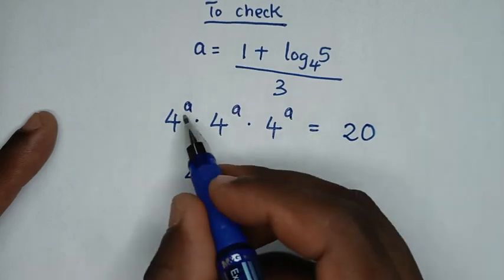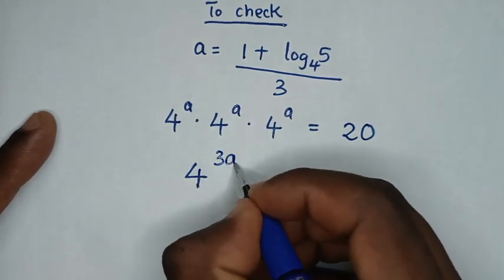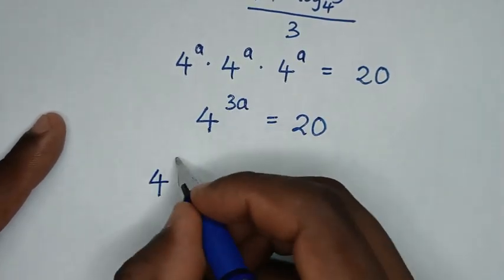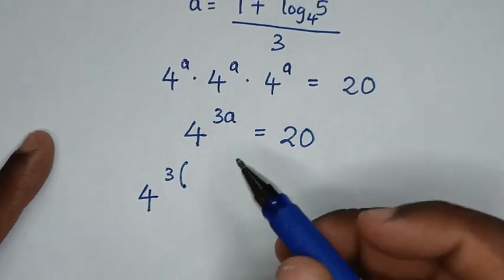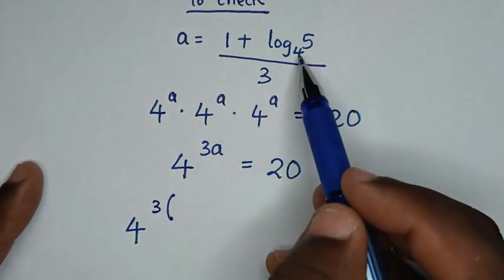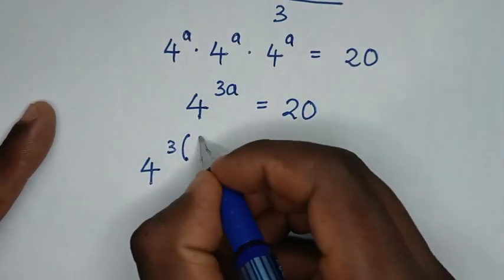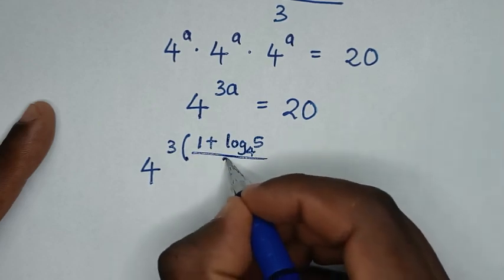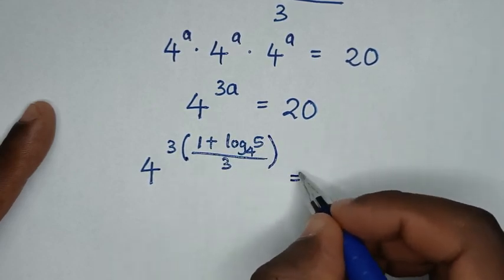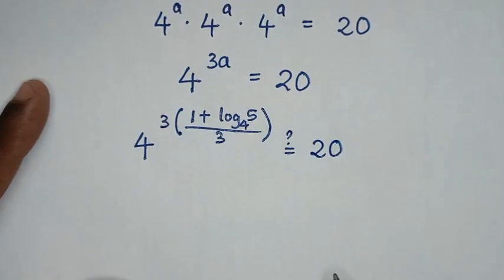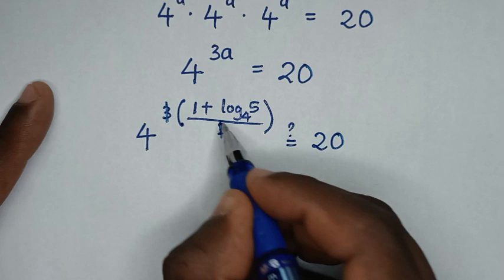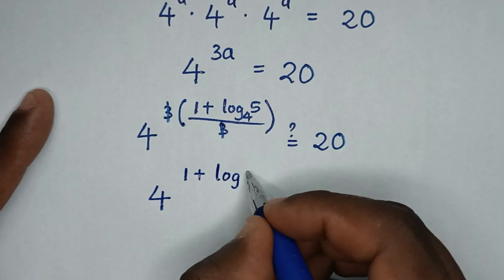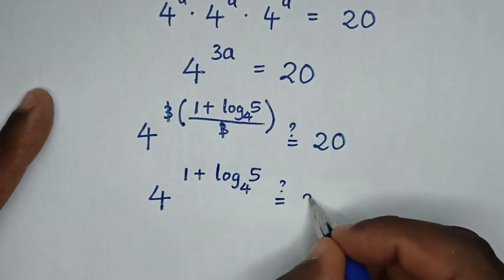From the original equation, 4 power of a times a times a becomes 4 power of 3a equals 20. We substitute our answer, so it becomes 4 power of 3 times the quantity 1 plus log of 5 base 4 over 3. The 3s cancel, giving 4 power of 1 plus log of 5 base 4, and we ask: does this equal 20?